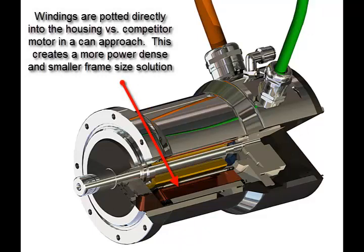MPW motors are potted directly into their 300 series stainless housings. This creates a motor with high power density versus competitor motors that simply insert an aluminum house motor into a stainless can. The result is that the MPW can achieve the same application requirements with a motor that is often one frame size smaller than those offered by other manufacturers.